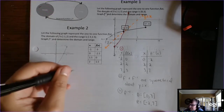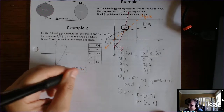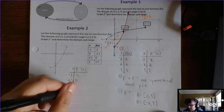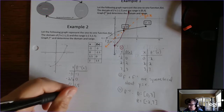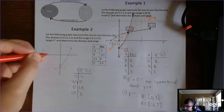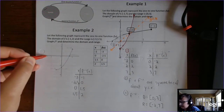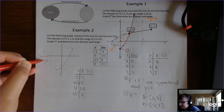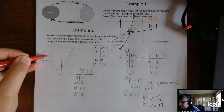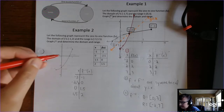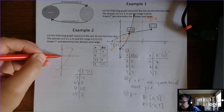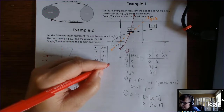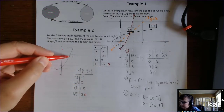To graph the inverse, the easiest thing to do is switch the ordered pairs. So negative 1, negative 3 becomes negative 3, negative 1. Then you have negative 2.5, 0. Then 0, 1.5. And then 1.5, 2. Now remember, this 2 and this 1.5 — that's a hole — so that means this point 1.5, 2 is also going to be a hole. I'll sketch the line y equals x just to make sure it looks symmetrical, and when I connect the dots, it sure looks symmetrical.